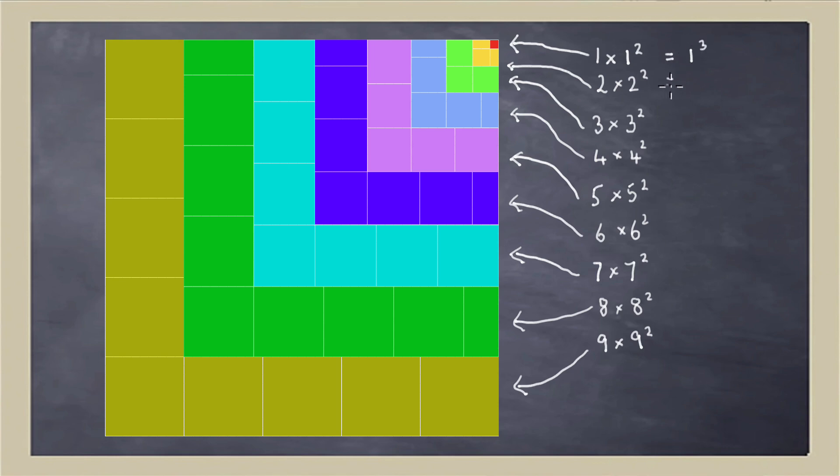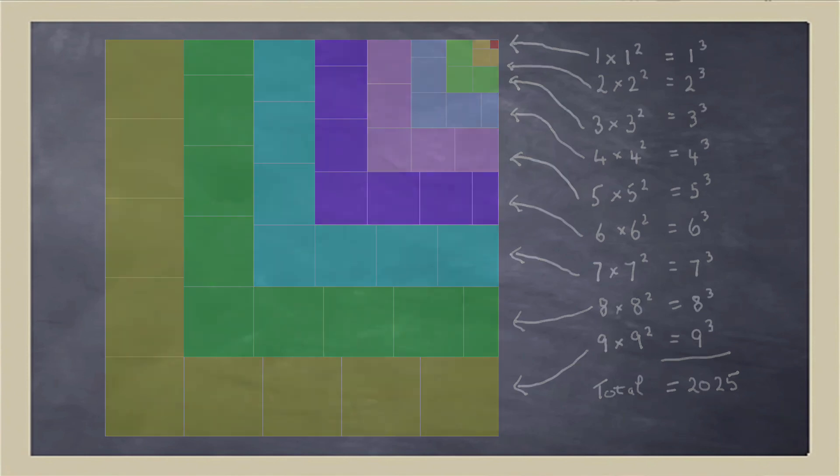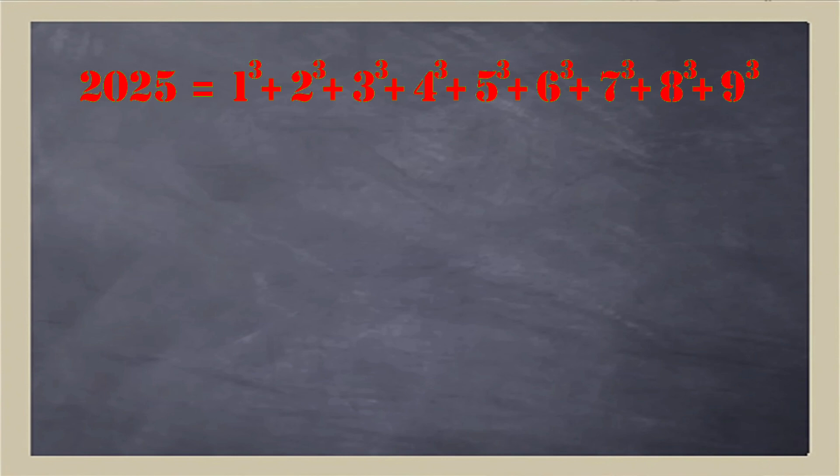Now look at one times one squared. That's one cubed. Two times two squared is written as two cubed. Three times three squared is three cubed. And you can see that we're getting all the cubed numbers from one up to nine. And remember that this huge diagram had 2025 little squares in it. And it seems to be covered by all these squares. So the total of all these nine cubes must be 2025. And here we have then another remarkable fact about 2025. It's the sum of the first nine cubes. Quite astonishing.